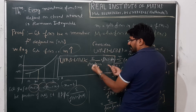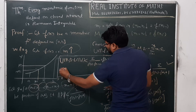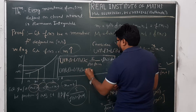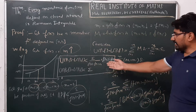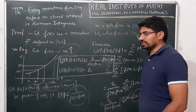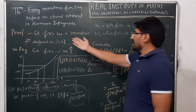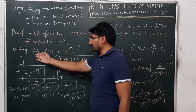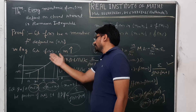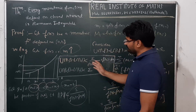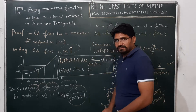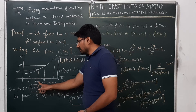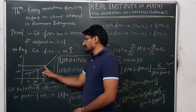So the condition is satisfied: U(P,f) minus L(P,f) is less than epsilon. Therefore our function is Riemann integrable. Here f(x) is a monotonic function defined on the closed interval, and without loss of generality we assumed f(x) is monotonically increasing, so the image of the smaller value is smaller and the image of the greater value is greater.